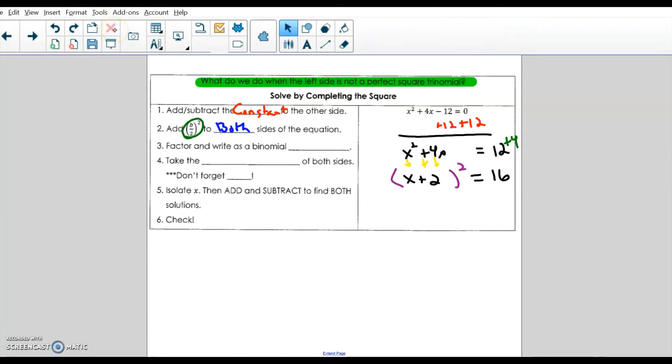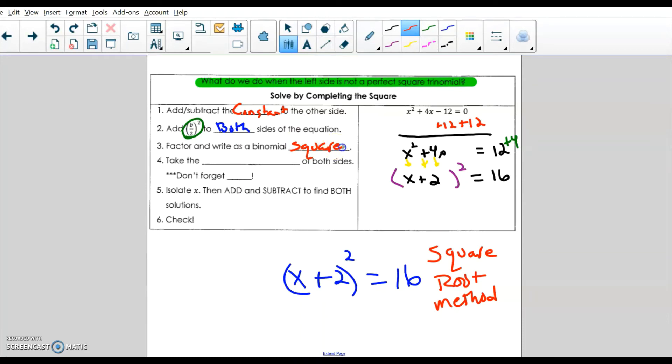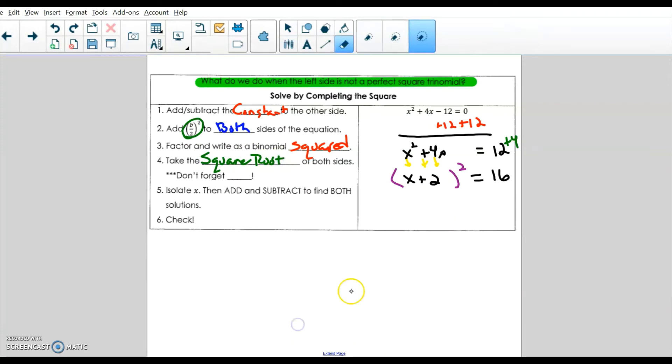So at this point of the equation, we are at x plus 2 squared equals 16, which can be solved using the square root method. So we factored and wrote the binomial square. We did that already. That's in purple. And we're about to take the square root of both sides. x plus 2 equals, this is really, really important, plus minus 4. Got to have both answers. It's a quadratic, got to have two answers.